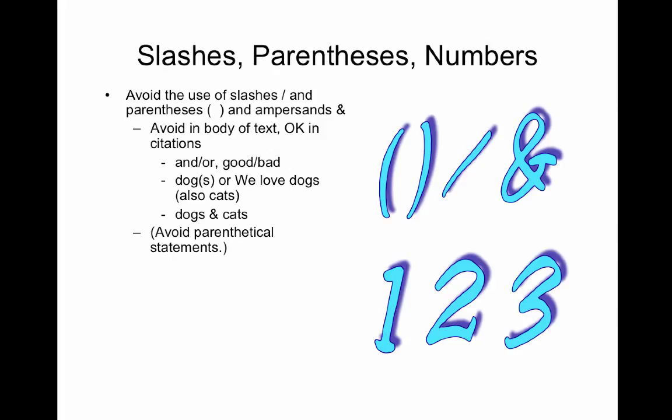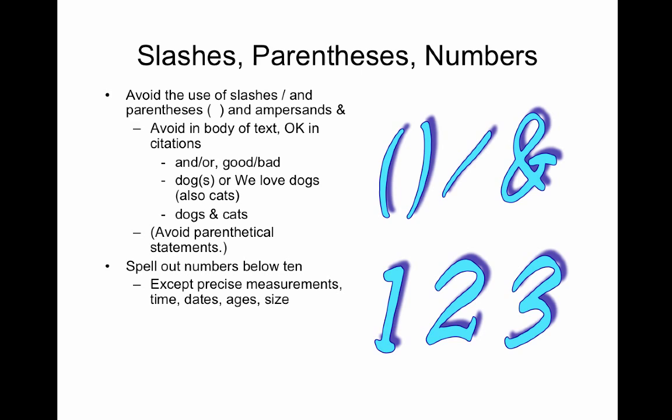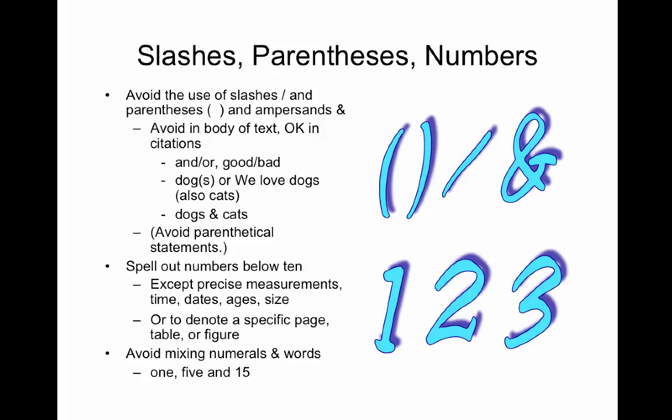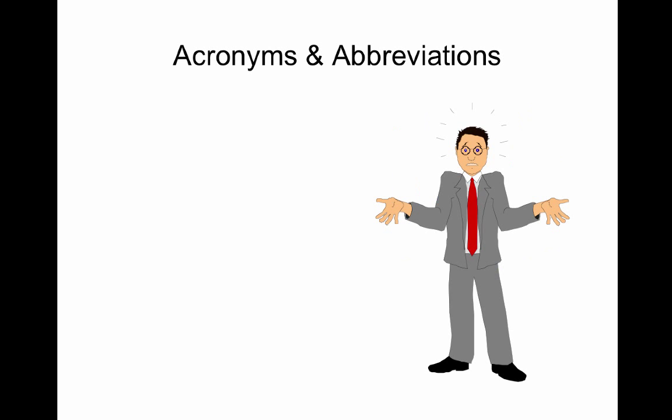They're a little bit like thought clouds. Spell out numbers below 10, except for precise measurements, time, dates, ages, and size, or to denote a specific page, table, or figure. Avoid mixing numerals and words, though. So instead of saying one, five, and 15, just go ahead and use numerals for the entire thing.